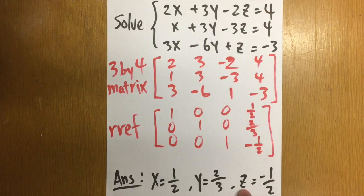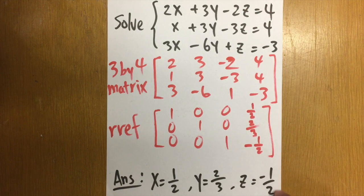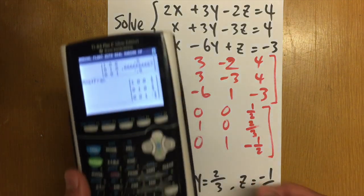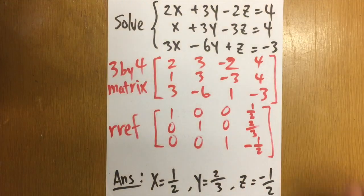And for the last one, this is the Z column. So of course, Z is equal to negative 1 half. And there you have it. This is the answer to this system of equations. That's it.